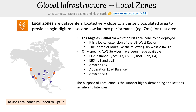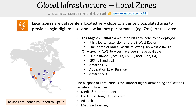The purpose of local zones is to support highly demanding applications that are sensitive to latency — things like media and entertainment, electronic design and automation, ad tech, and machine learning. It makes sense: looking at LA, they're in media and entertainment and dealing with lots of media content, so latency has to be really low for them.